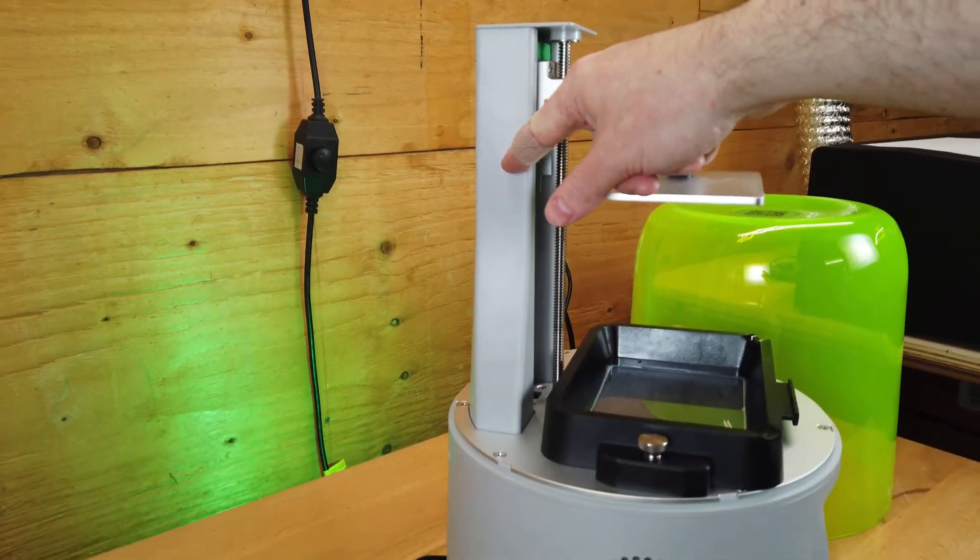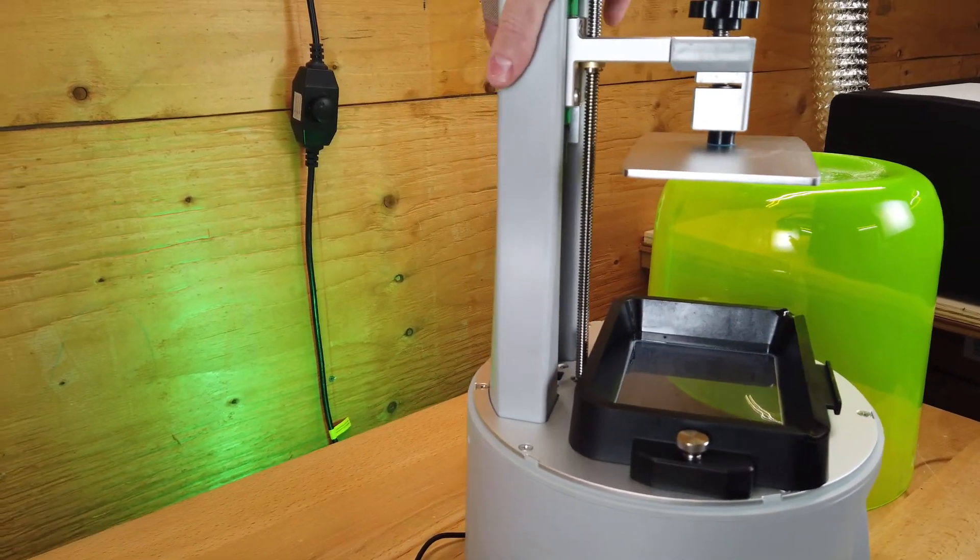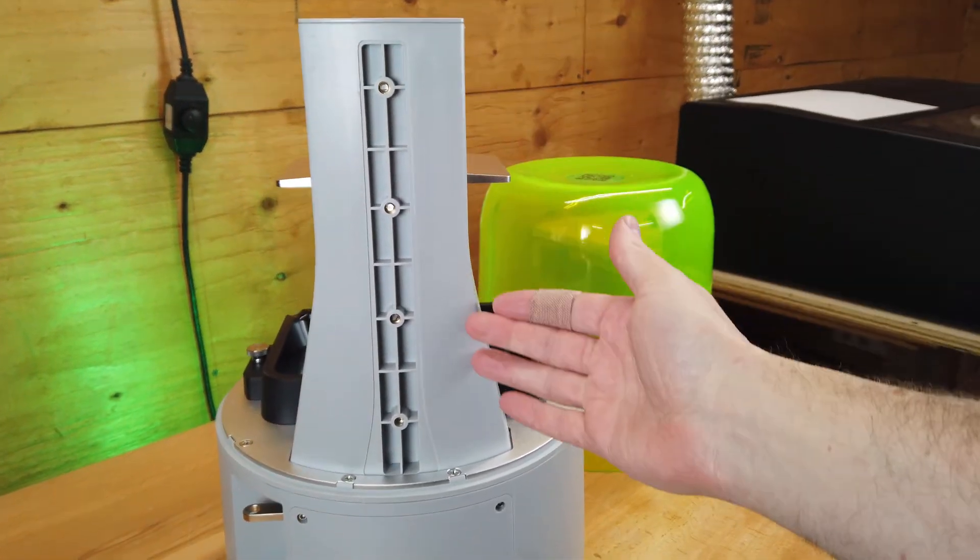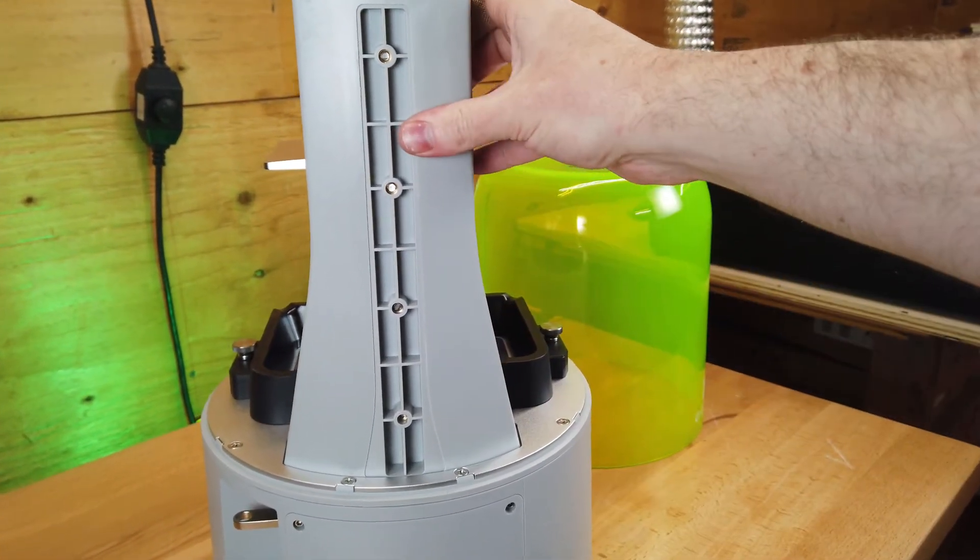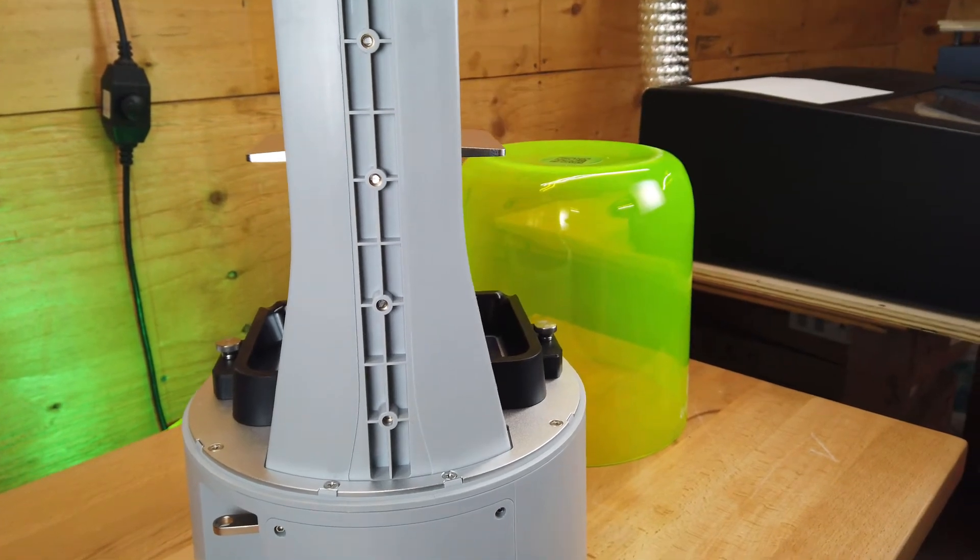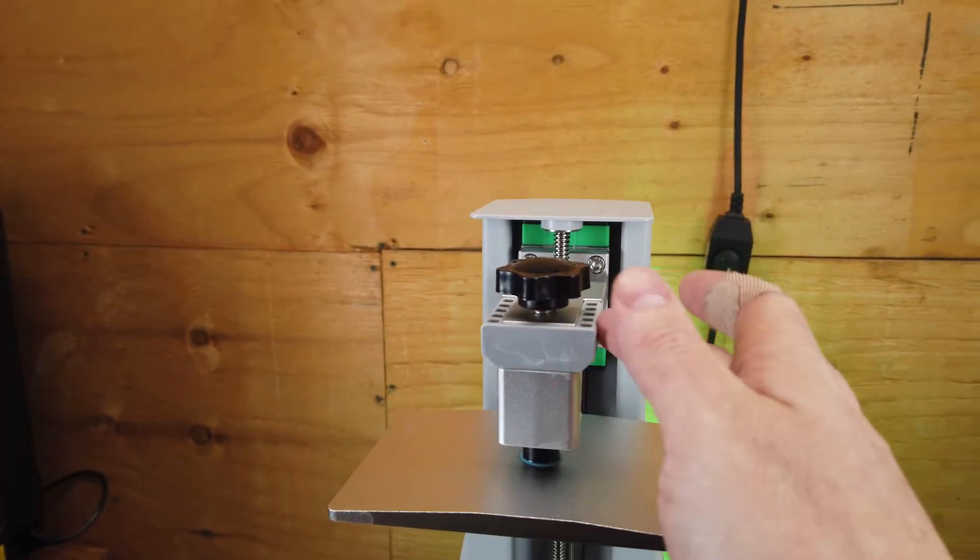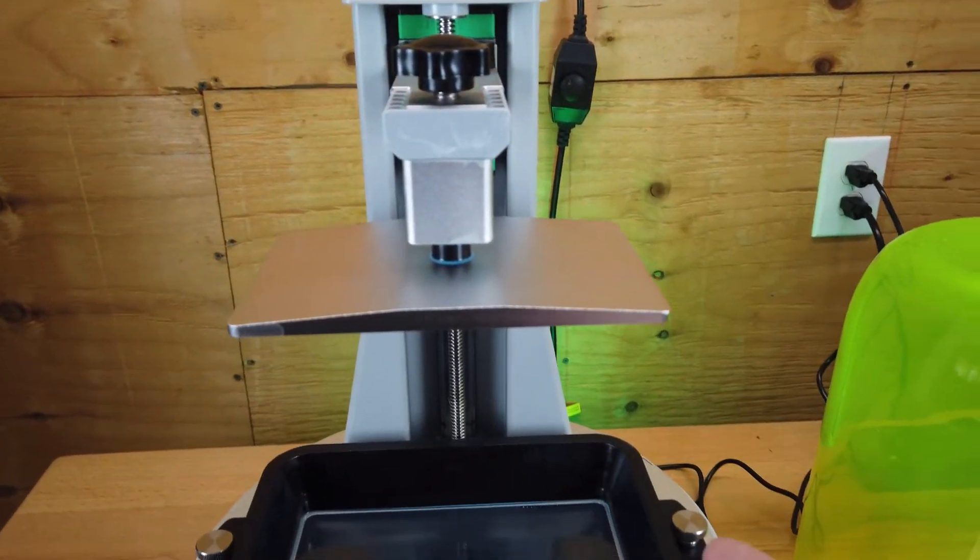One thing I'm a little worried about with this printer is the actual Z-axis support. This entire thing is all plastic. Any other printer I've ever used, this is always made from metal or aluminum. Really my main concern with it is it's going to have flex to it. I also don't like that the build plate's hanger is plastic as well.